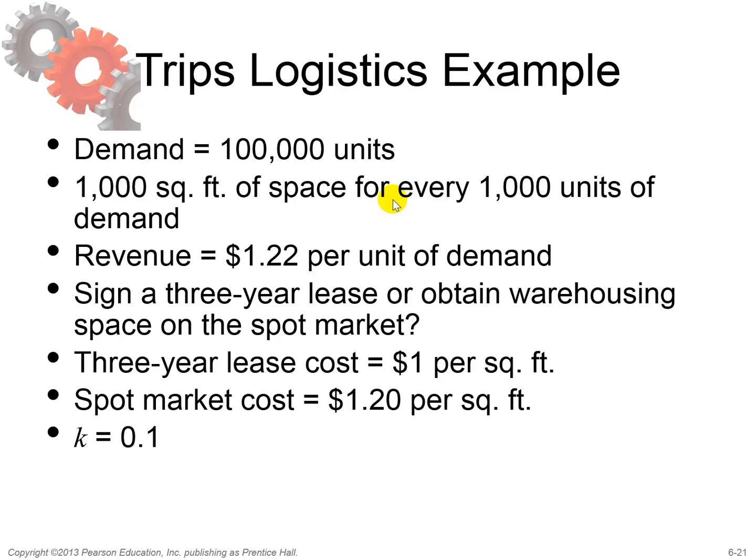Let's use an example: the Trips Logistics example. The demand is 100,000 units. 1,000 square feet of space is used per every 10,000 units of demand. The revenue is one dollar twenty-two. The three-year lease cost is one dollar per square foot, and on the spot market it costs one dollar twenty per square foot. The discount rate used is 0.1, that is ten percent. Do we sign a three-year lease or obtain warehousing space on the spot market?